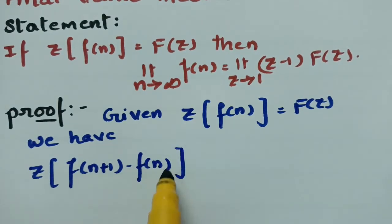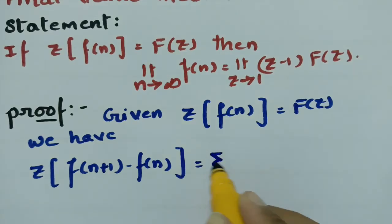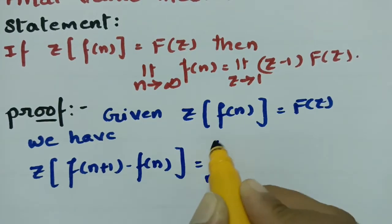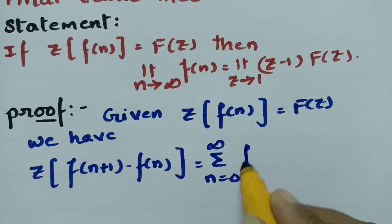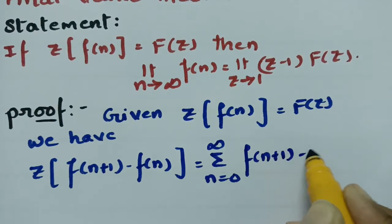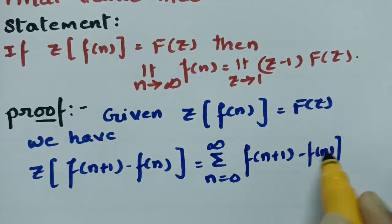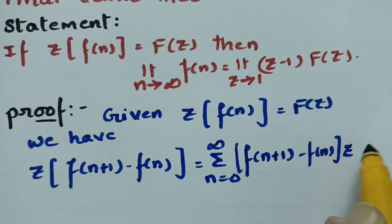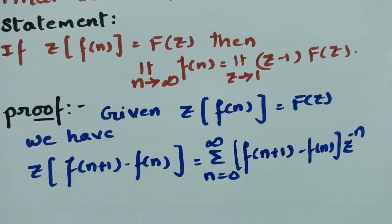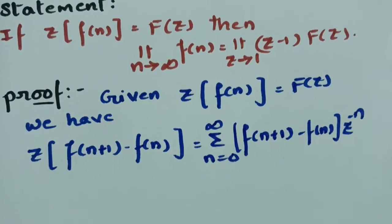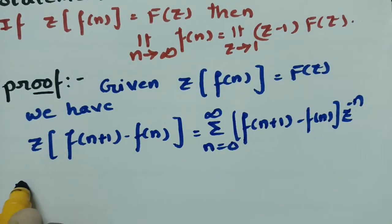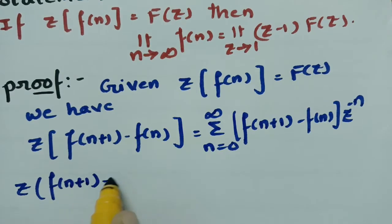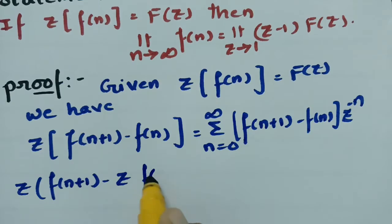According to the definition, this can be written as sigma from n equals 0 to infinity of [f(n+1) minus f(n)] into z to the power minus n. According to the definition, this can also be written as Z transform of f(n+1) minus Z transform of f(n).